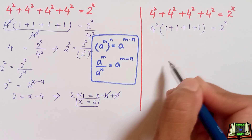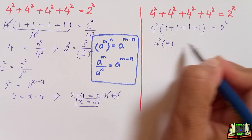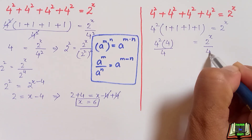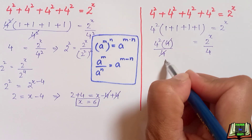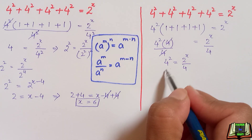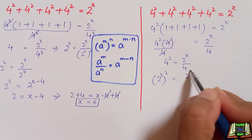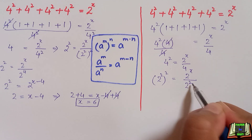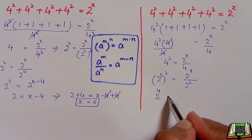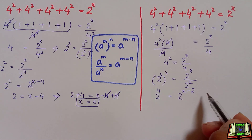That equals 2 raised to power x. We can write it as 4 raised to power 2 times 4 equals 2 raised to power x. Dividing both sides by 4, this 4 and this 4 cancel out, giving 4 raised to power 2 equal to 2 raised to power x over 4. Writing 4 as 2 raised to power 2, we apply the power of a power rule, multiplying the powers to get 2 raised to power 4.